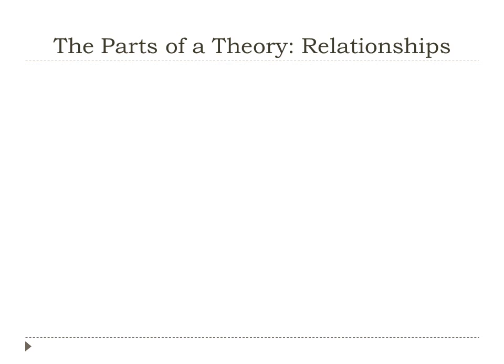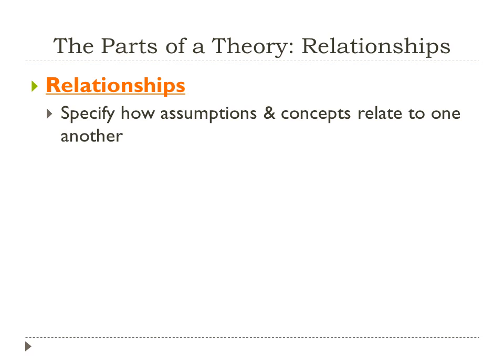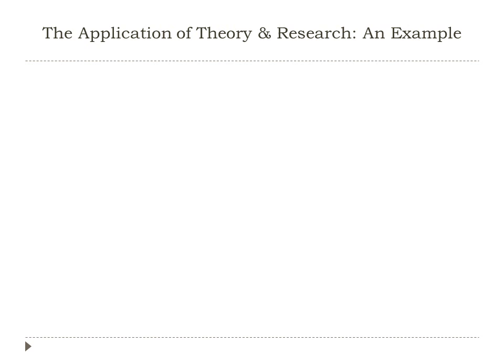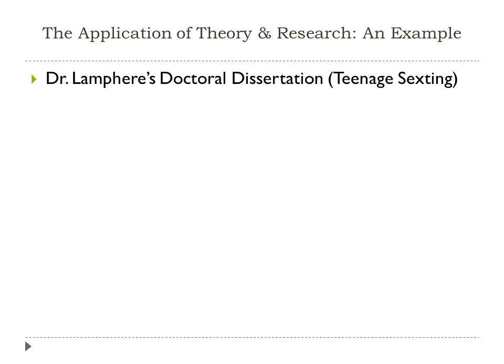Another key part of a theory involves relationships. Relationships specify how our assumptions and our concepts relate to one another — they give us the 'why' of why the relationship exists. For example, I wrote my doctoral dissertation on teenage sexting, which is when teenagers send inappropriate nude, semi-nude, or sexually suggestive messages, pictures, or videos to each other via cell phone.